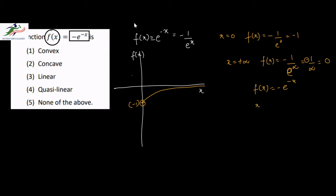And since f(x) is equal to minus e to the power minus x, if I put x as tending to minus infinity, then f(x) will be minus of e to the power minus of minus infinity, which is plus infinity. So f(x) will tend to minus infinity. Therefore as x tends to minus infinity, f(x) tends to minus infinity.